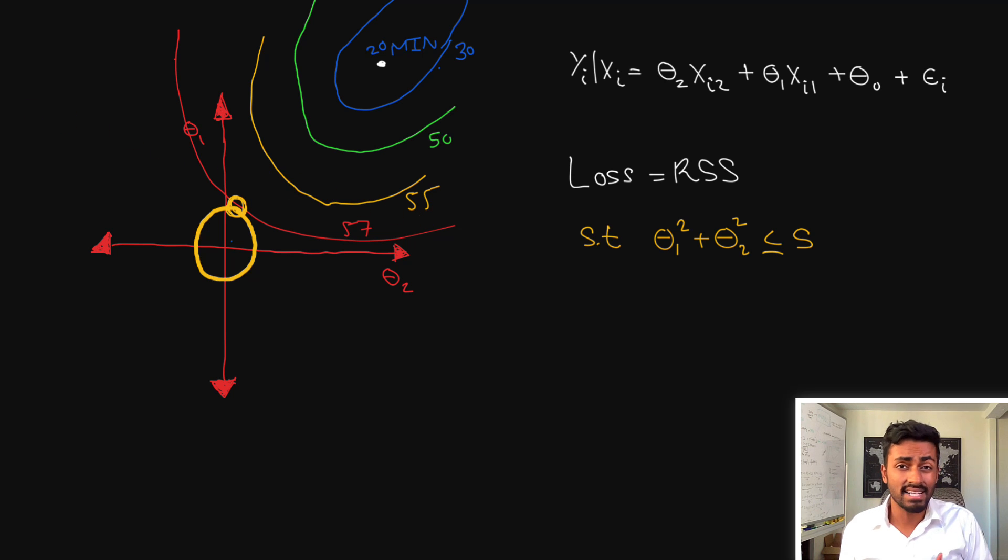In order to get lasso all we do is just change the constraint that we're optimizing against. Instead of making it in the circle we might want to make it in this diamond. Mathematically this means that in order to minimize the residual sum of squares we want to do that such that the absolute value of theta 1 plus the absolute value of theta 2 is going to be less than or equal to some s.